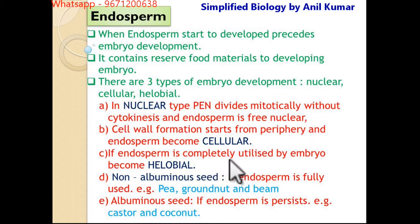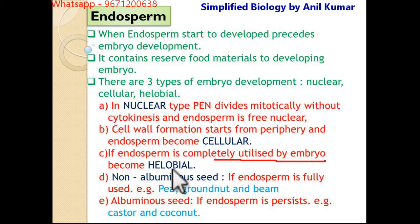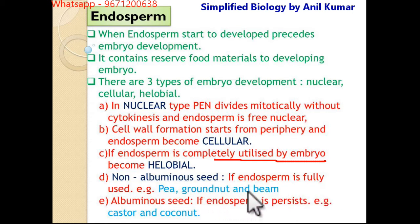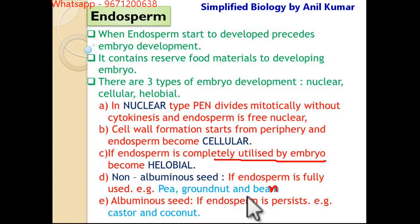If endosperm is completely utilized by the embryo, the seed will be non-albuminous, also called exalbuminous. If endosperm is fully used, like in pea or bean, that seed is non-albuminous. In the albuminous seed, endosperm persists — like in coconut, where there is a watery substance present.